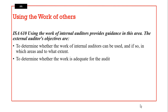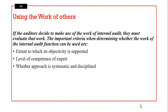Using the work of others is very common in audit to avoid duplication of work. Using the work of internal auditors provides guidance in this area. The external auditor's objective is to determine whether the work of internal auditors can be used, and if so in which areas, to minimize duplication of effort. You need to be careful because some experts may not be competent. A key criterion is assessing the extent to which objectivity — closely associated with independence — is supported.